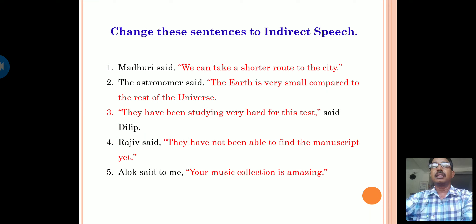Children, now I am giving some sentences to change into indirect speech. First sentence: Madri says, 'we can take a shorter route to the city.' Second sentence: The astronomer said, 'the earth is very small compared to the rest of the universe.' Third sentence: 'They have been studying very hard for this test,' said Dilip. Fourth sentence: Raju said, 'they have not been able to find the manuscript yet.' Fifth sentence: Alok said to me, 'your music collection is amazing.' Thank you.